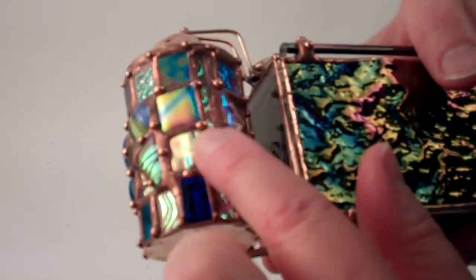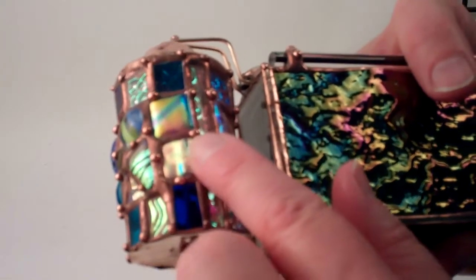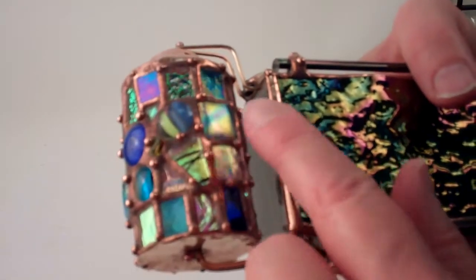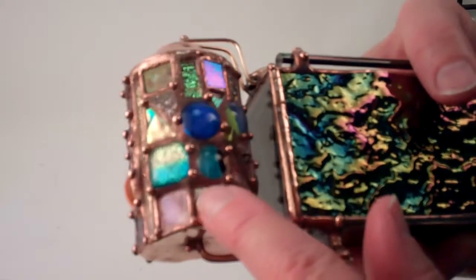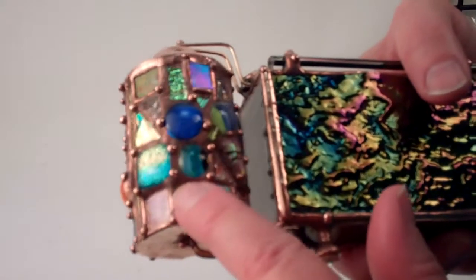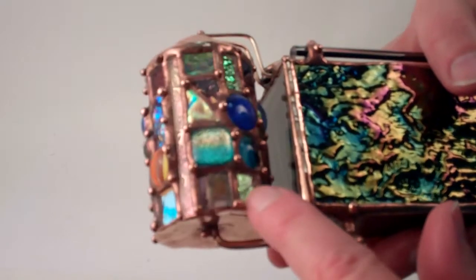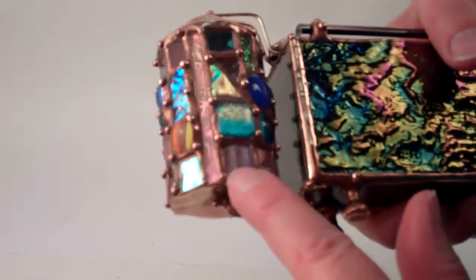These pieces here are actually fused dichroic glass that Sue creates in her kiln. So is this one, and then she also selects additional pieces of dichroic glass and stained glass like this one.